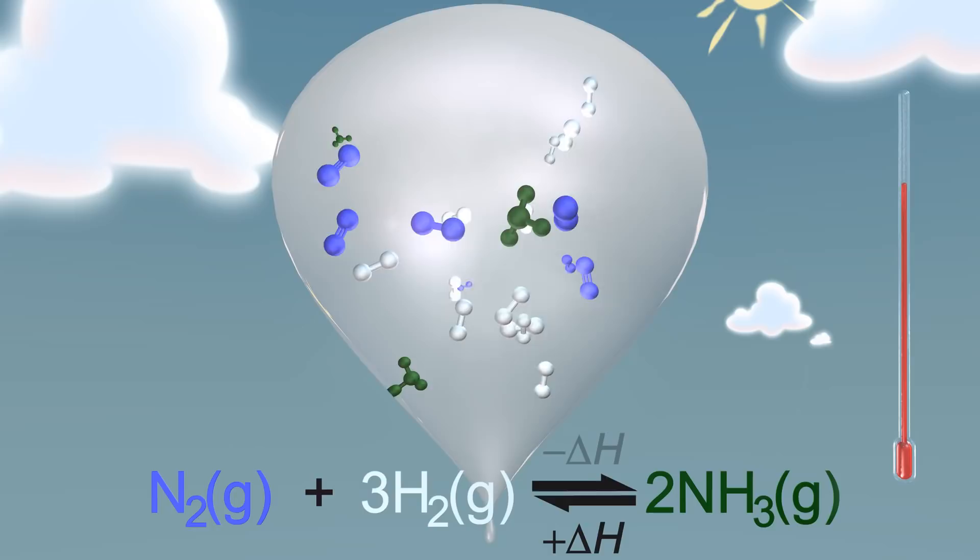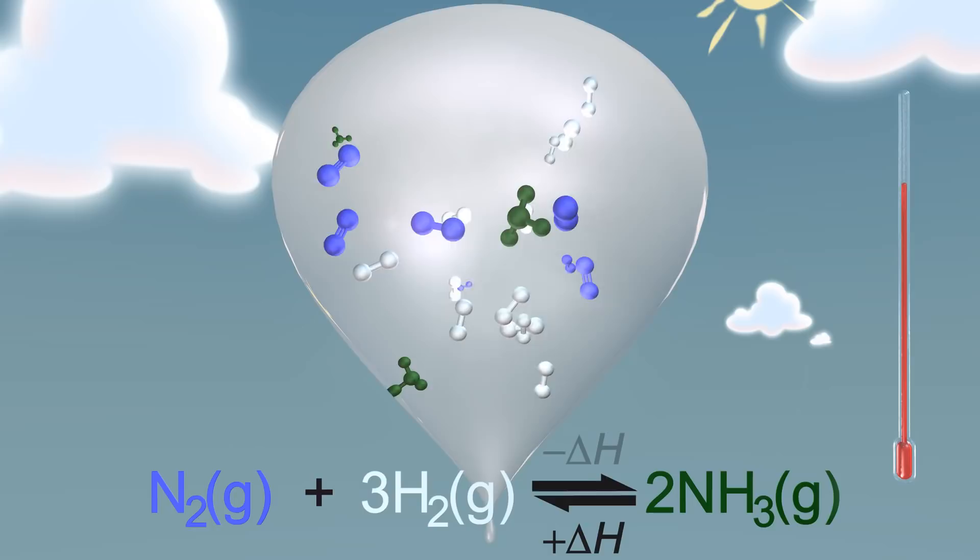Decreasing the temperature drives the equilibrium position towards the exothermic right-hand side. The system gives heat energy back to the surroundings. A better yield is obtained at lower temperatures, but this benefit is offset by a slower reaction.